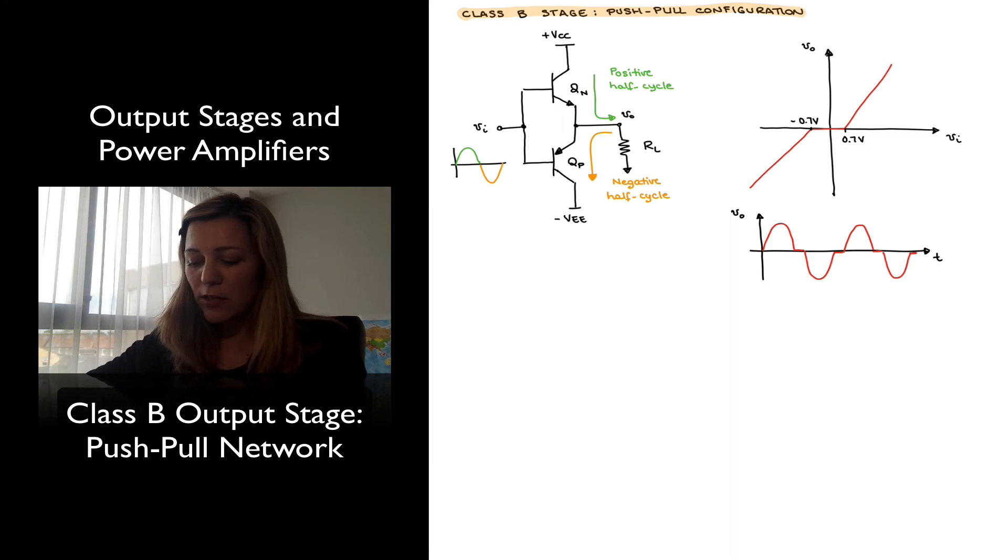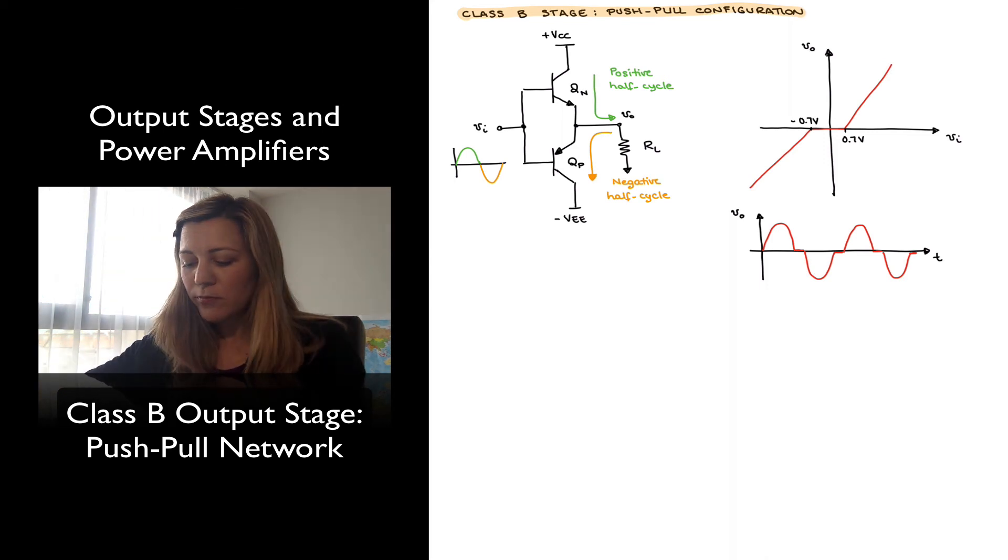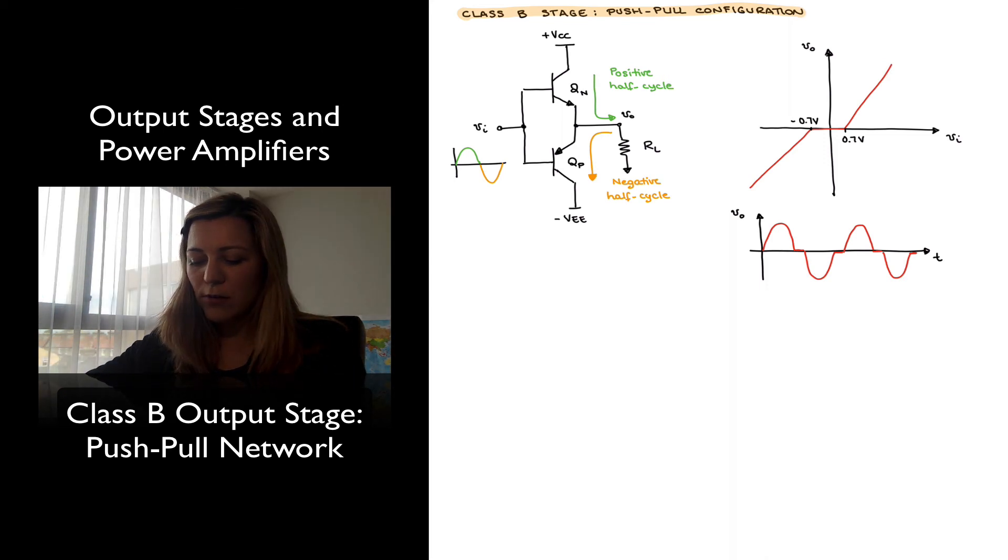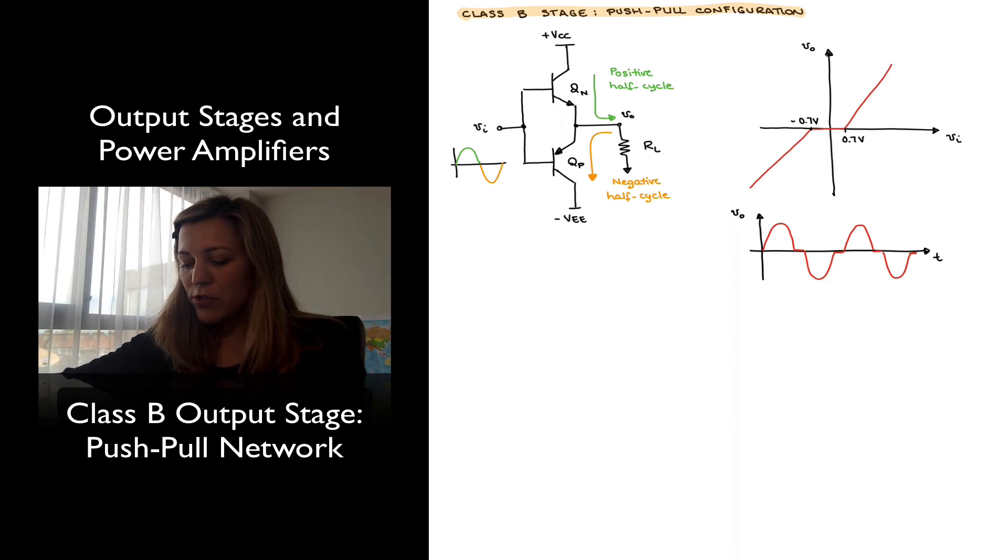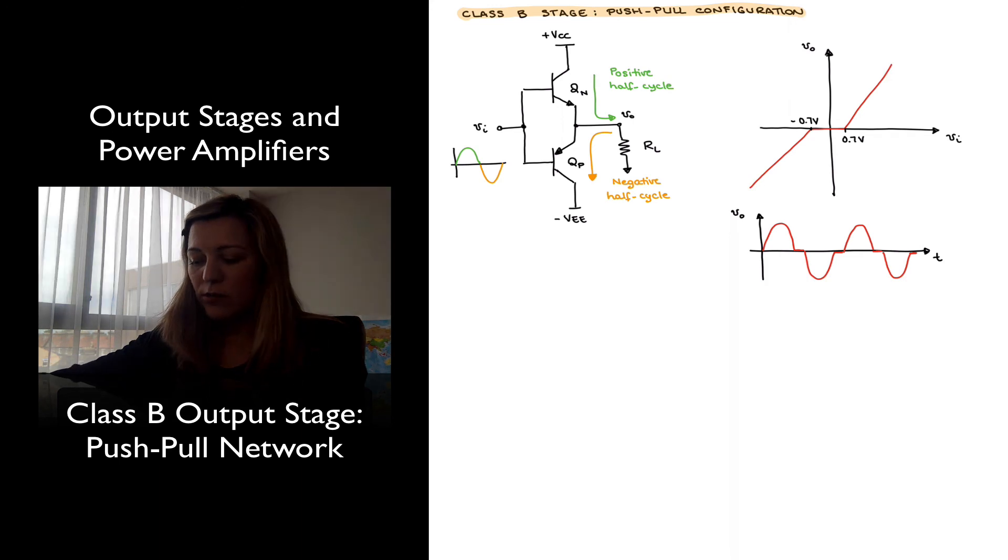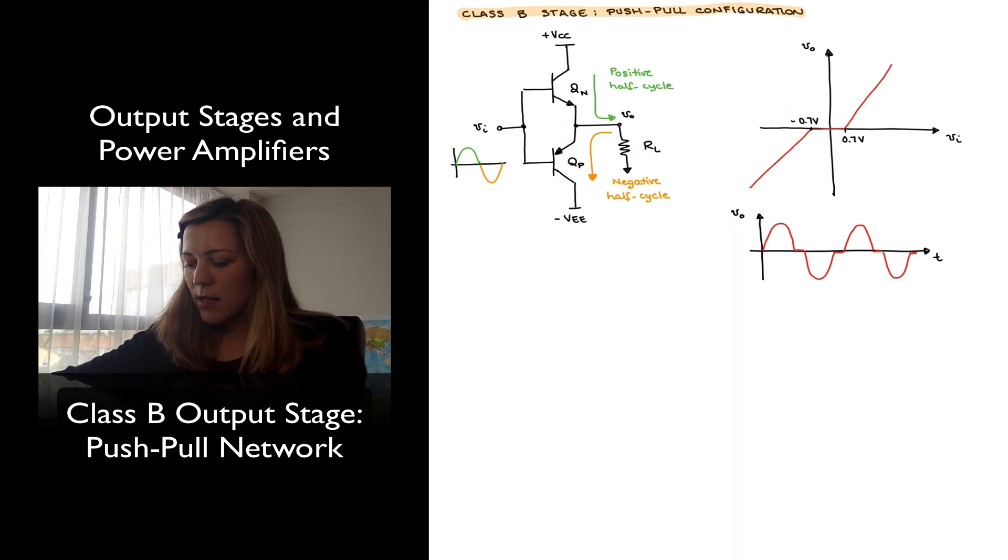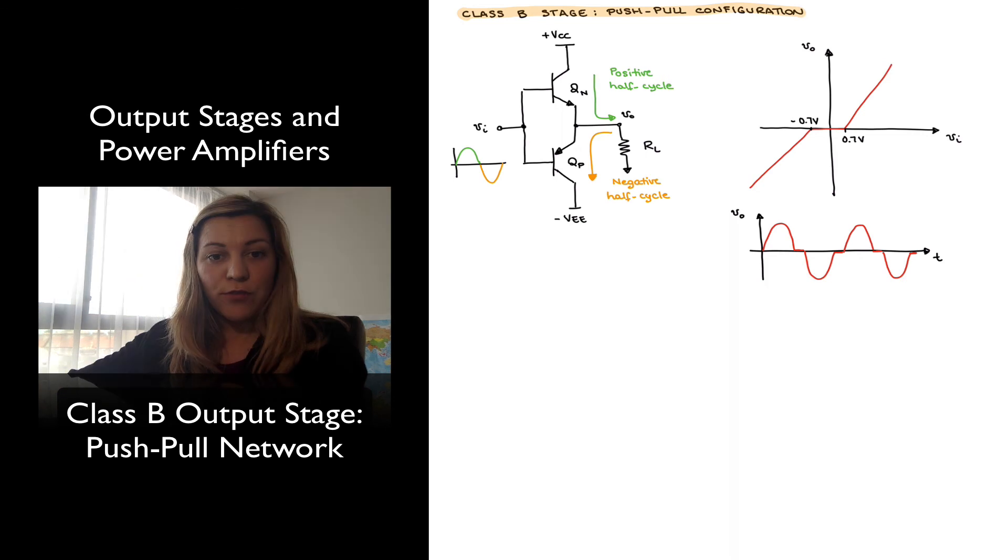So if we imagine an input signal, which is sinusoidal as drawn there, with the positive half cycle labeled in green and the negative half cycle labeled in orange, you will see that during the positive half cycle, QN will be conducting, sourcing the current that's needed for the load, and QP will be in cut-off.